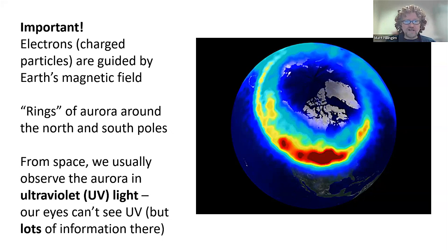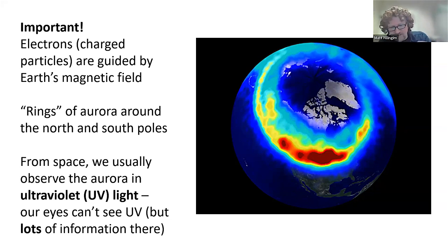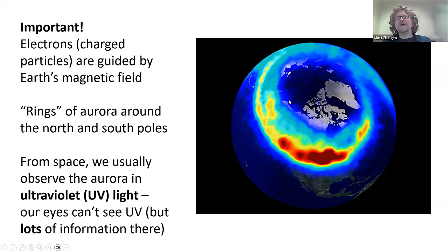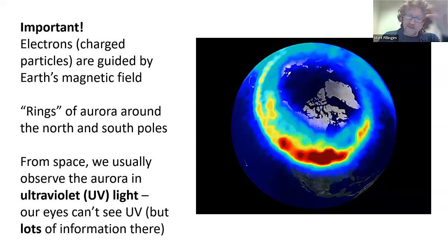Since it's ultraviolet light, our eyes can't see it. Sometimes we get pictures where the color has nothing to do with the color of lights being emitted — this is all ultraviolet. Here, these colors just represent how bright it is. Red is really bright and greenish and bluish colors are not quite as bright. But it illustrates there's this ring around the North Pole — you can see Greenland, Northern Canada — this ring of Aurora around the North and South Pole.